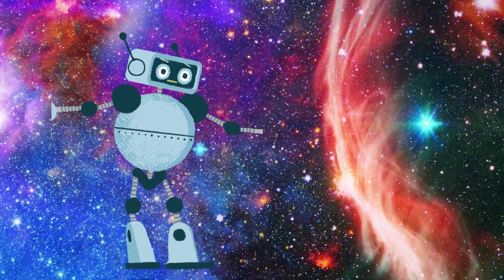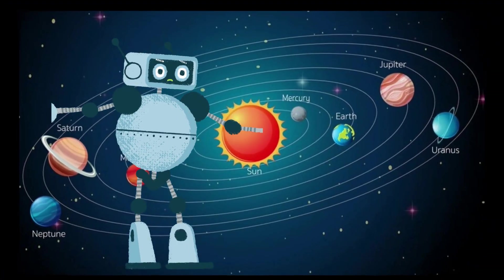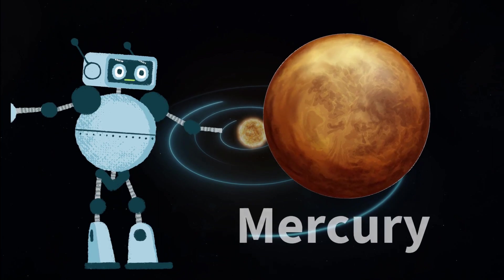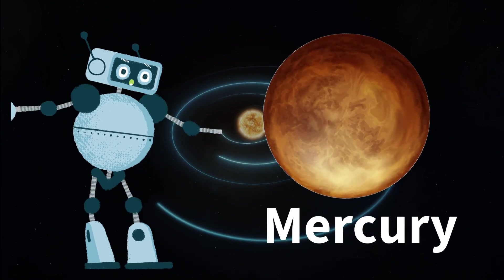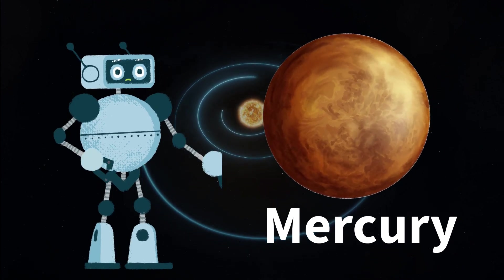The inner planets: Mercury, Venus, Earth, and Mars. Mercury, the swift messenger, is the closest planet to the Sun and the smallest planet in our solar system. It's covered in craters with extreme temperature variations, hot during the day and freezing at night.